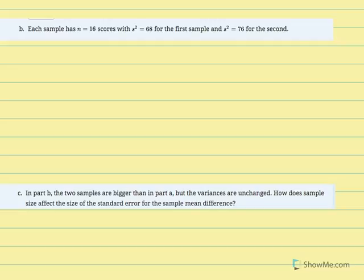Problem 11B: now each sample has 16 individuals with variances of 68 and 76 for the first and second samples respectively. Those variances remain the same; what we're changing is sample size from 4 to 16. We're again going to calculate the estimated standard error of the mean difference and see the effect of increasing sample size.